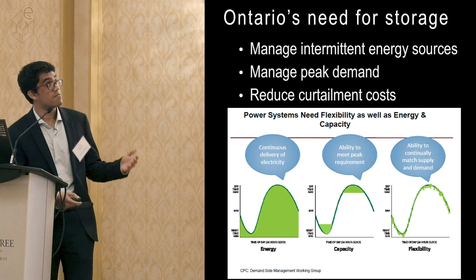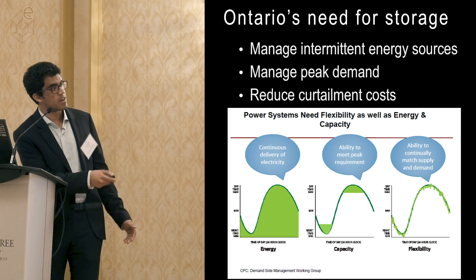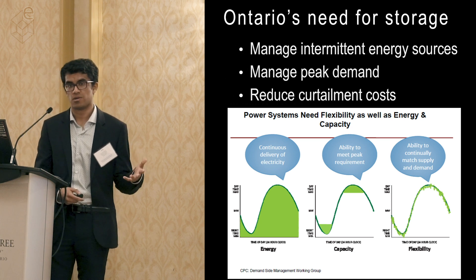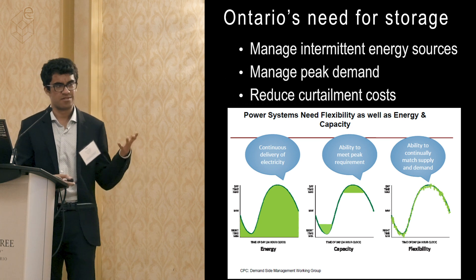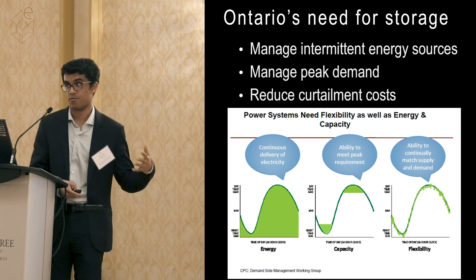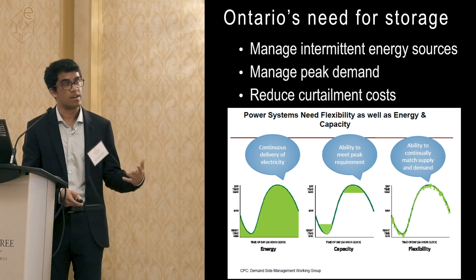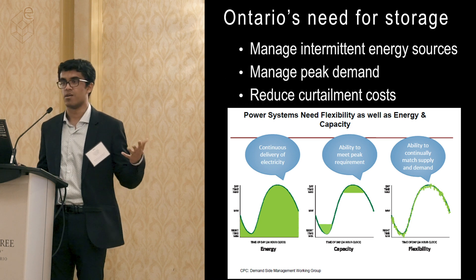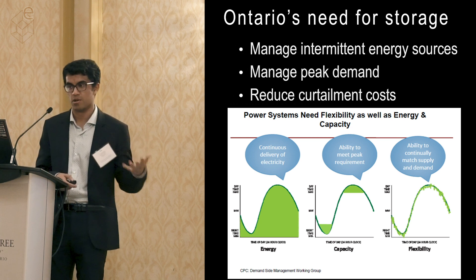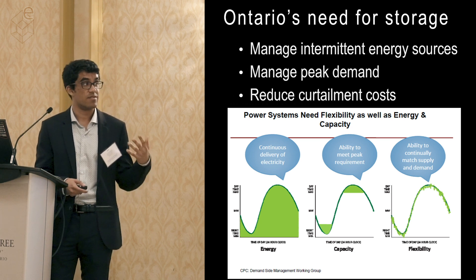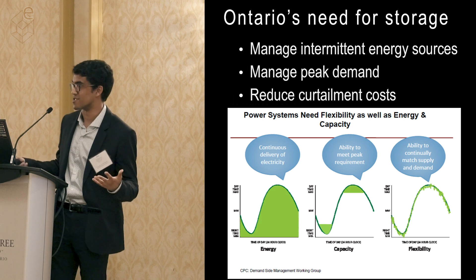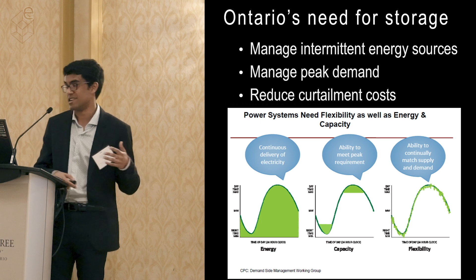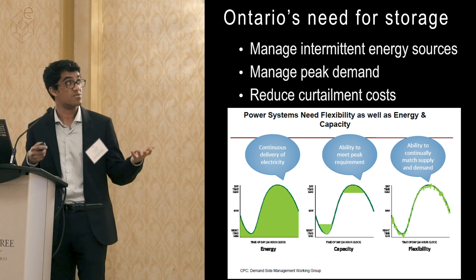Another incentive to look into Ontario energy storage is that we need to manage our intermittent energy sources — things like renewables such as wind and solar. Although they've been great for the greenhouse gas reduction initiative we've been pushing forward with as a province, we have to accept that wind and solar come embedded with an intermittency problem. We can't always predict how much the sun will shine or the wind will blow for a given week, so these power sources have a stochastic nature.